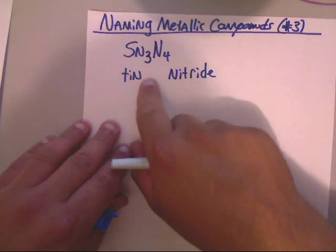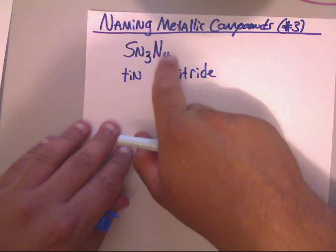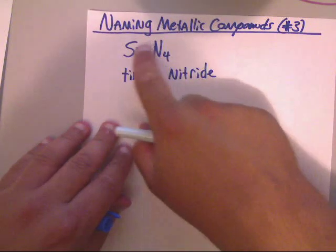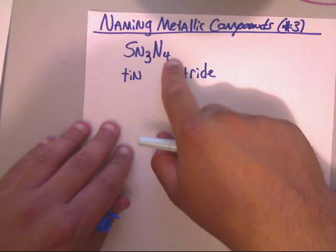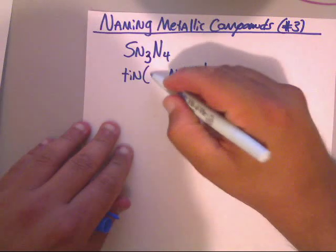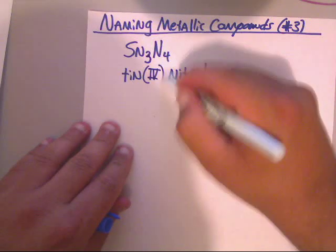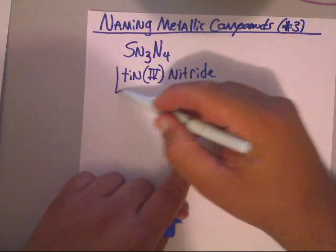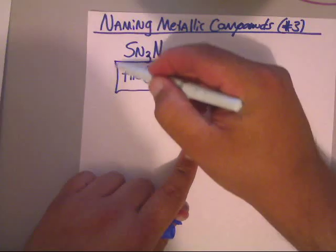What do you think the Roman numeral is here? Do you think it's this 3 or do you think it's this 4? Well, if you said it was the 4, you're right. It's the one that's furthest away from Sn. That's what belongs originally to Sn as the charge. So we know that this is tin(IV) nitride. Now this 3 belongs to the N. That's how we got this name, tin(IV) nitride.